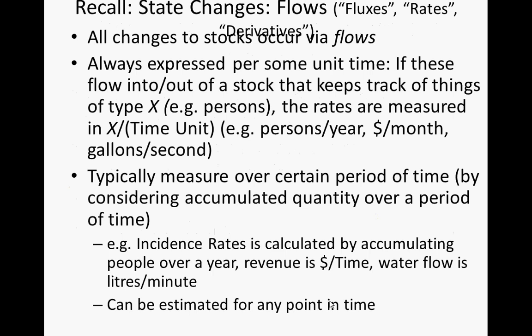In contrast to stocks, which can have a wide variety of units, flows are always measured as something per unit time. In terms of the value of a flow, we're specifying a rate of change. If it's flowing into a stock of people, and we're measuring time in days, the unit associated with the flow would be persons per day. If the stock has dimension X, then flows into that stock will always have X divided by some time unit as their dimensions.